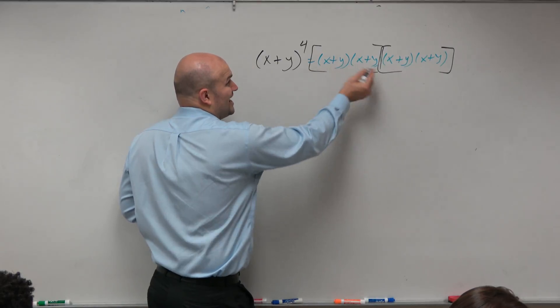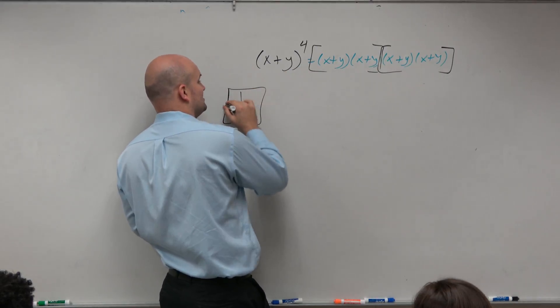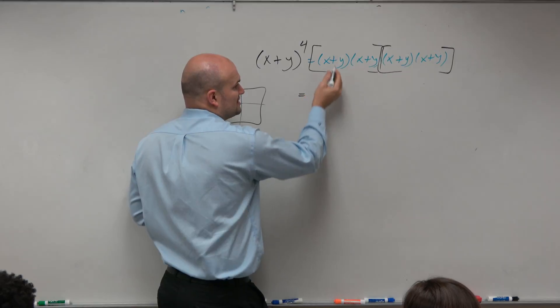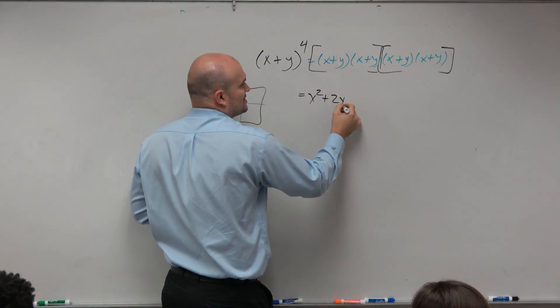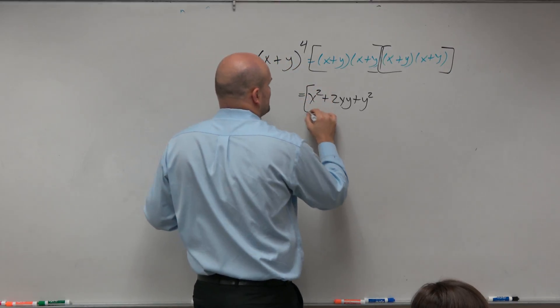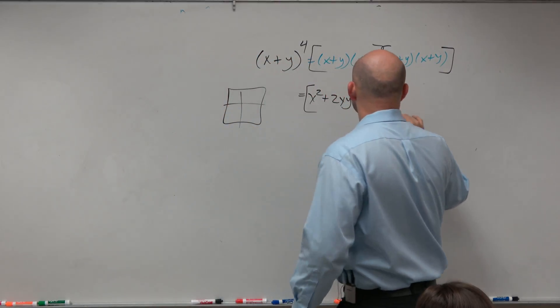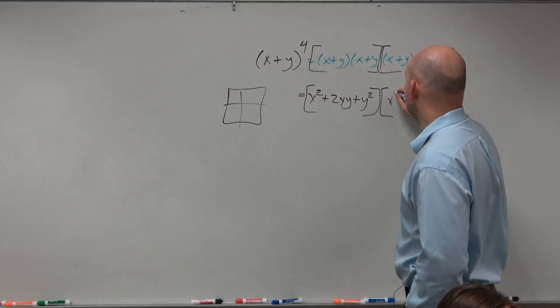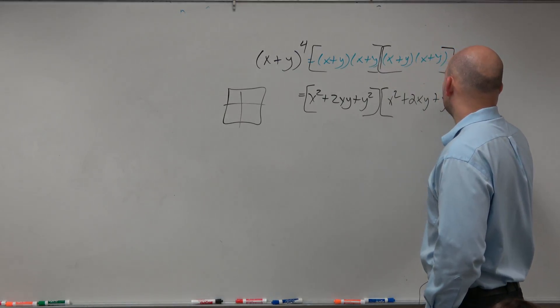So I already know, I don't have to do a box method for this or whatever else. I already know that this product is x squared plus 2xy plus y squared. And hopefully if you guys did your math, you guys would have got the same worked out solution. This is the same thing, so I'm going to do x squared plus 2xy plus y squared.